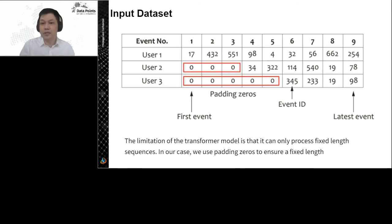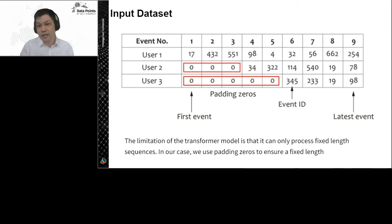The event model utilizes a sequence of events before churn in the user journey. There are a couple of modeling approaches we considered, and we found the transformer model has the best performance. However, there is a limitation — the transformer model takes a fixed length of events. So we can have a user with 100 events and another with 50 events. What we do is fix the latest event first. If a user has more events than the fixed length we decided, we cut it. If a user has fewer events, we use padding zeros to reach the fixed length. In this way, the transformer model can run and provide results.